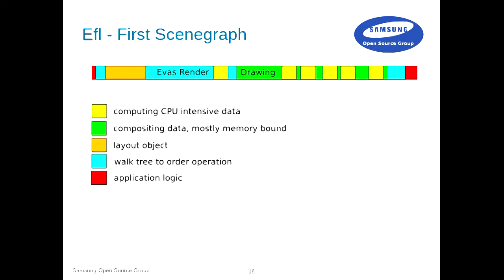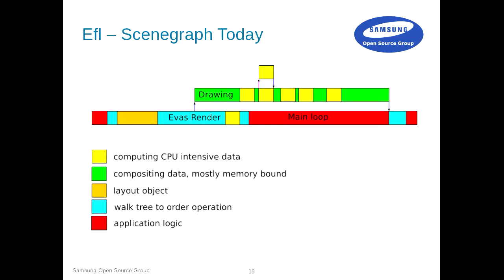Looking at what the scene graph process was when we first started in EFL, it was a mix of walking the tree, laying out objects, and computing CPU-intensive data — like computing line positions for a rotation — all done completely serialized. The first thing that needed to be fixed was to offload the rendering thread, so the main application thread can continue doing its business while the frame is being pushed to screen. That was the first step for us.